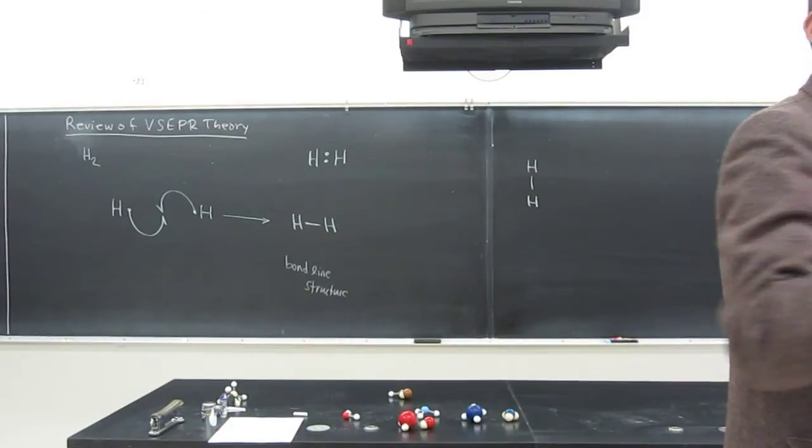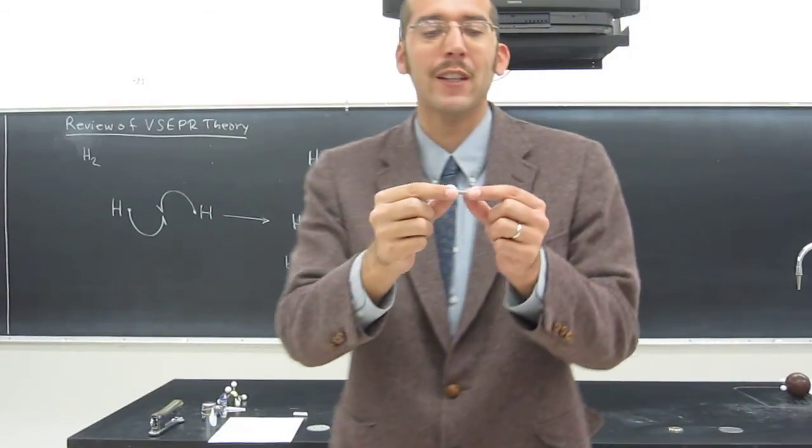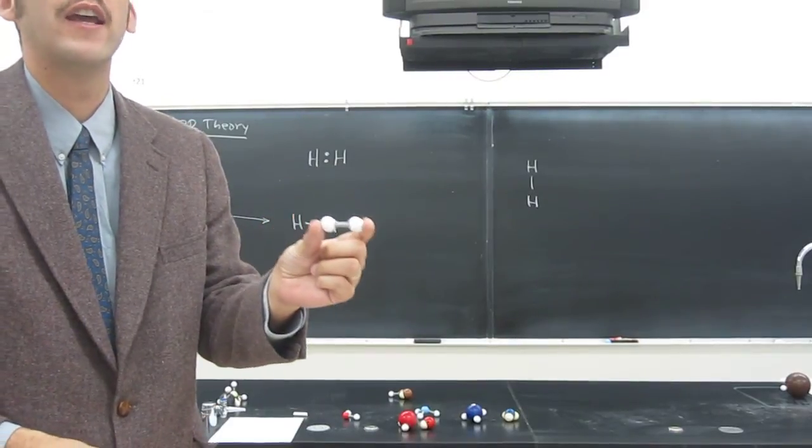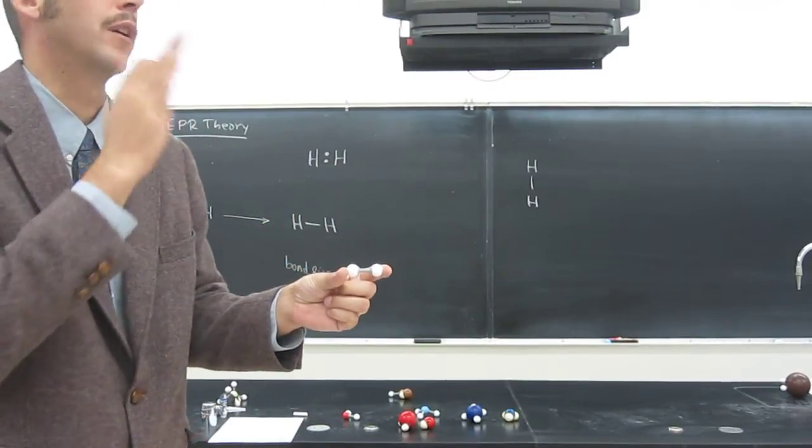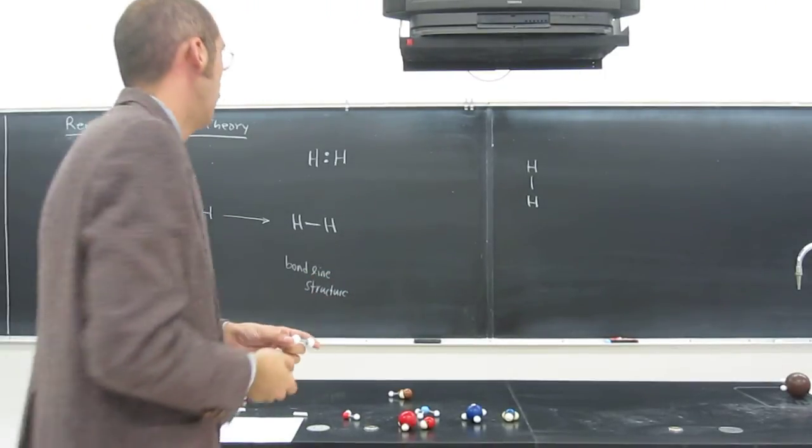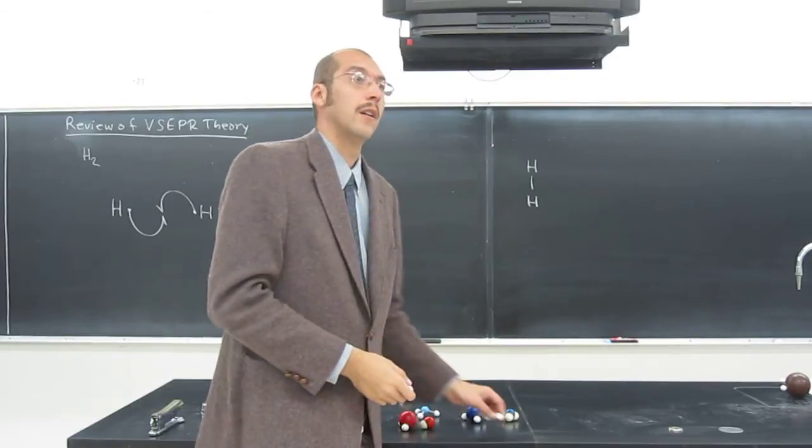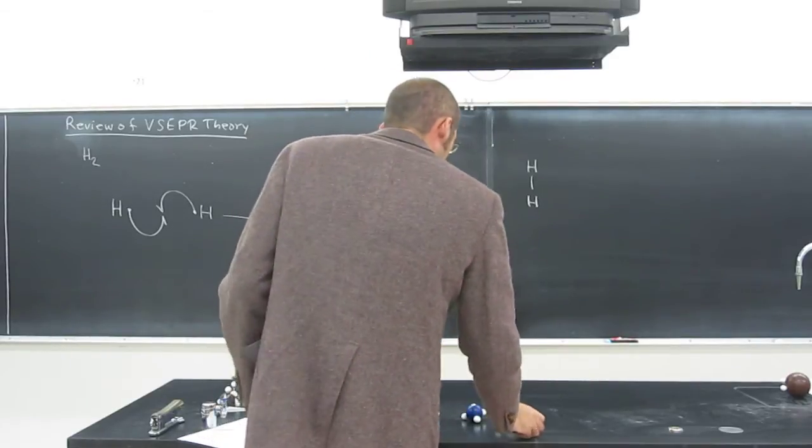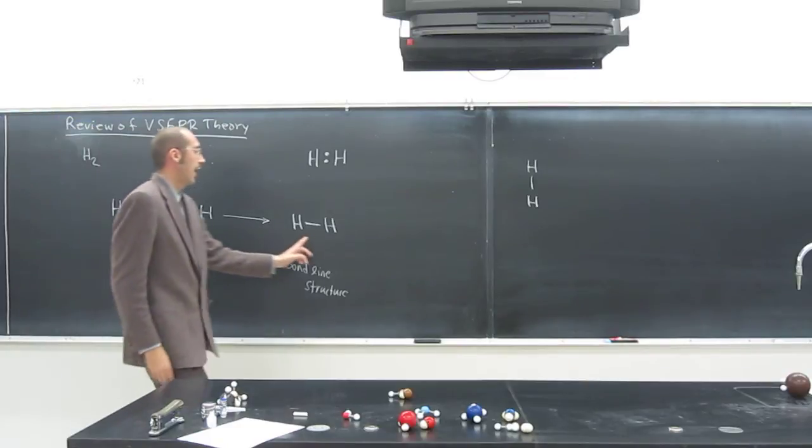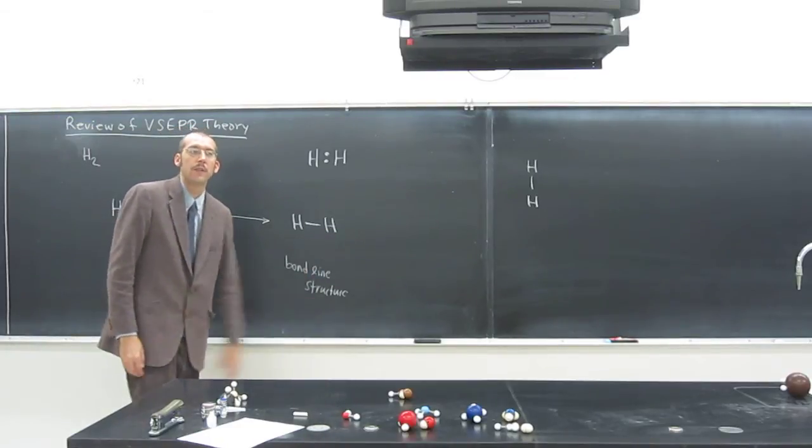So what we would say is if we wanted to talk about the molecular geometry of hydrogen and any of these diatomic gases like fluorine, chlorine, bromine, nitrogen, et cetera, they're all going to be linear. Why? Because, of course, there are two atoms that are in a line with each other.